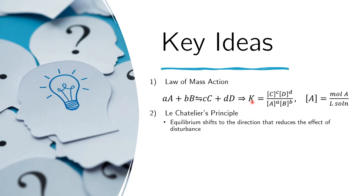Then we need Le Chatelier's principle to know how the equilibrium will shift — whether there will be more products or more reactants if we do something to the system. The principle states that the equilibrium shifts to the direction that reduces the effect of the disturbance. For example, if we add more products, the way to reduce them is to make more reactants, so the equilibrium shifts to the left. If we add more reactants, the reaction will proceed to the right to consume them.